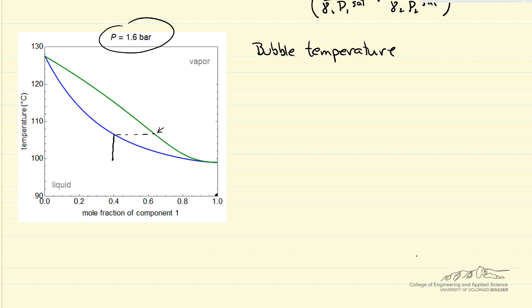The bubble temperature is on this blue line, and the equations are the same: the bubble temperature is x1 gamma 1 p1 sat plus x2 gamma 2 p2 sat. However, now what's different is the pressure is known, and we know x1 and x2, gamma 1 and gamma 2, but we don't know the saturation pressures because we don't know the temperature, and that's what we're solving for.